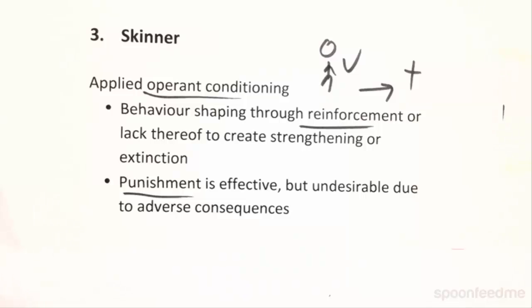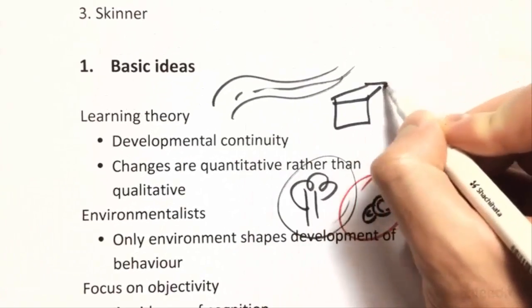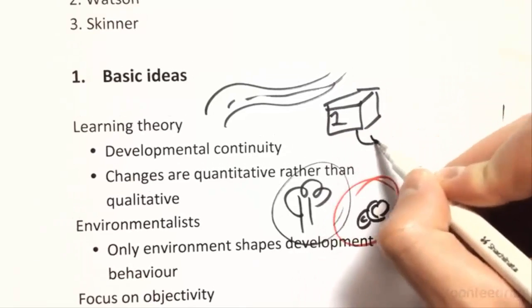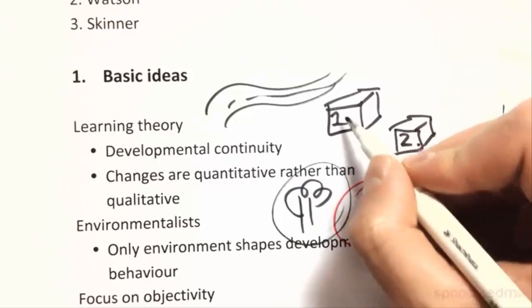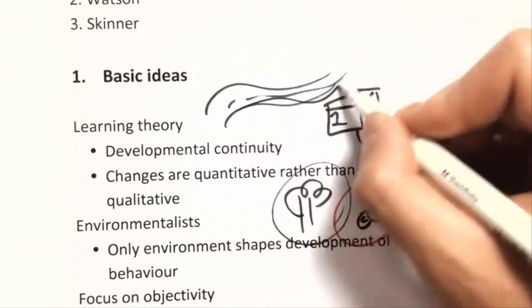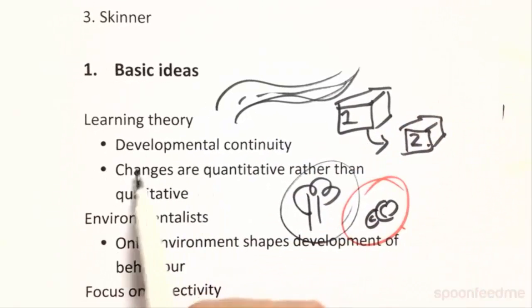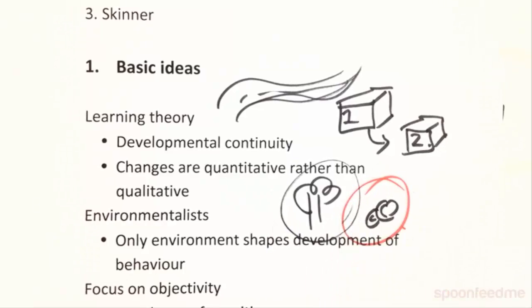Developmentally, behaviorism is a learning theory and it's about continuous change, as opposed to stage theorists, which we'll look at next. Stage theorists say there's this part of your life, then there's this other distinct part — it's not a flowing process like behaviorists think. And as we said, it's all about nurture, not nature. We'll continue next time with social learning and Bandura's cognitive behavior theory.